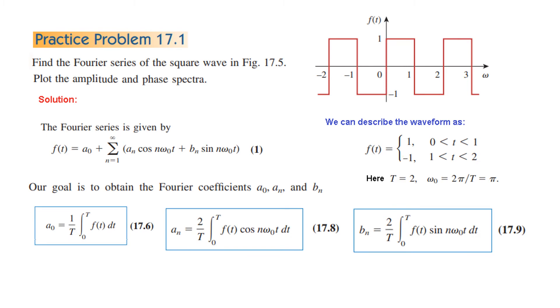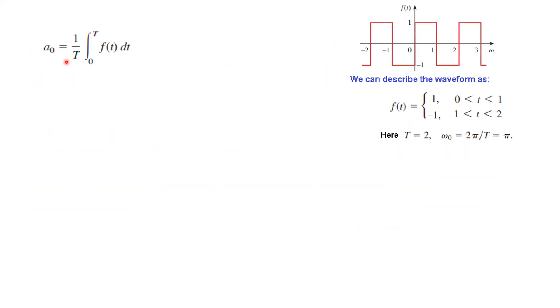Okay. And to find all these three constants, we have to use these formulas. This is also explained and given in the book. So this is for a0, this is for an and this is for bn. Let's find a0 first of all.